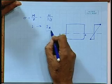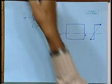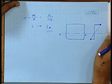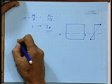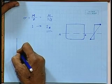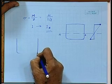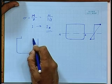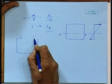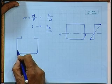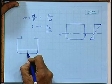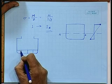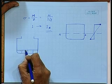Now, how do we calculate this moment of inertia I? We have different types of sections. If you take an ordinary cargo vessel, you have a structural arrangement like this — I am drawing it arbitrarily here.